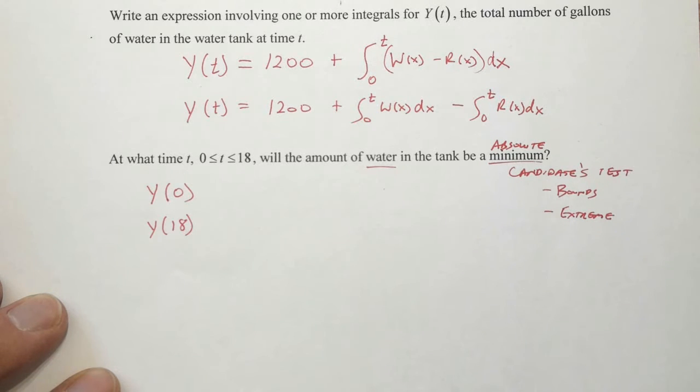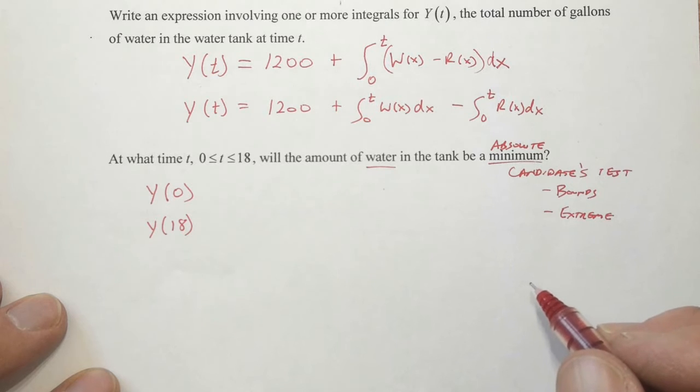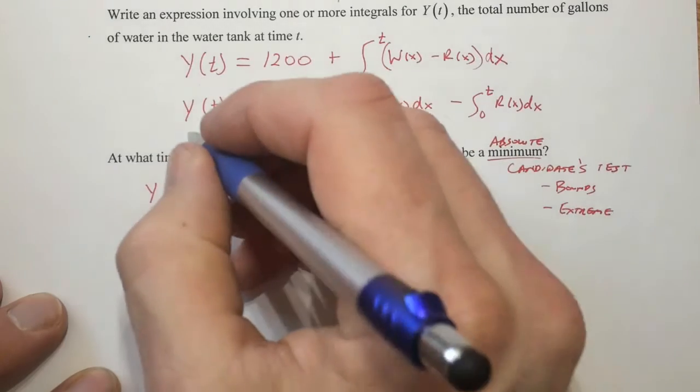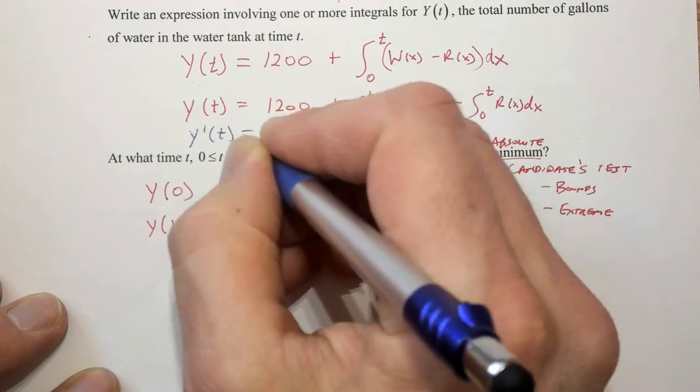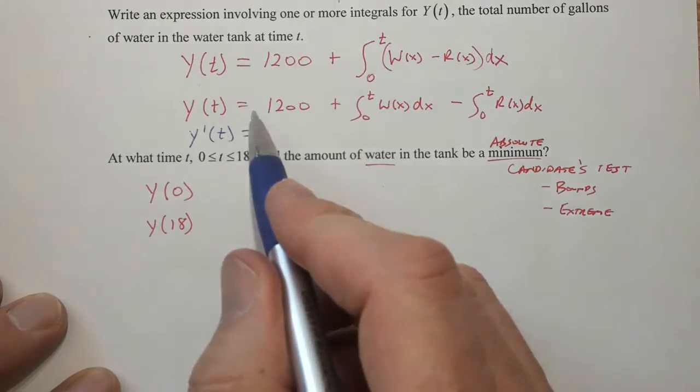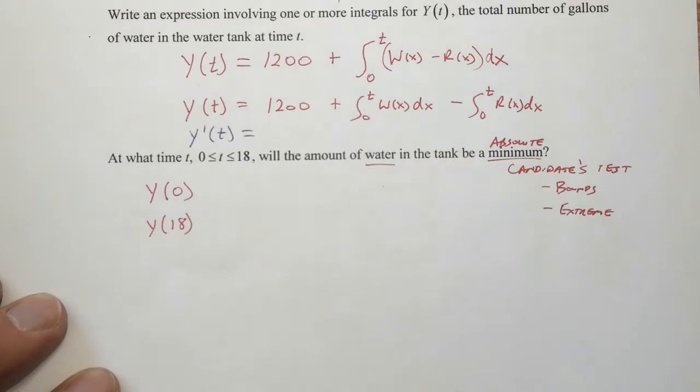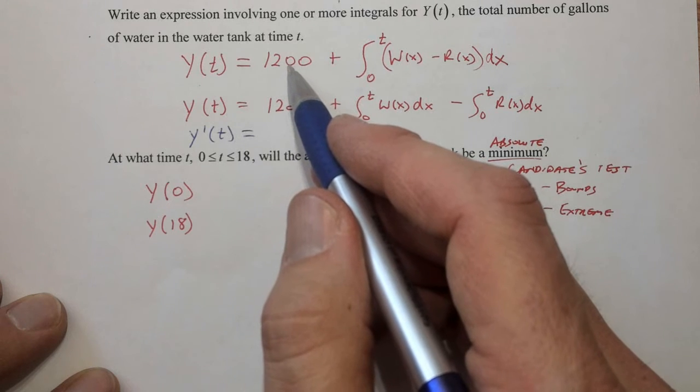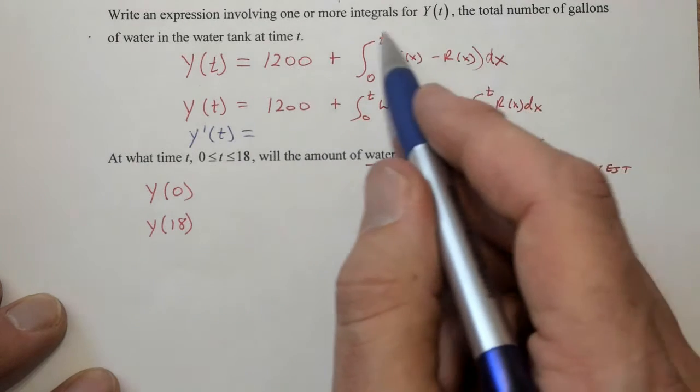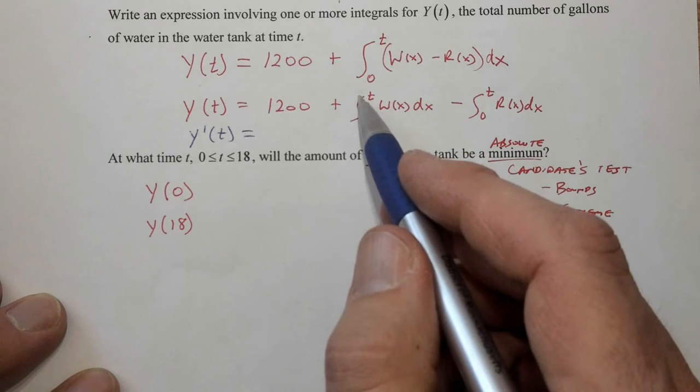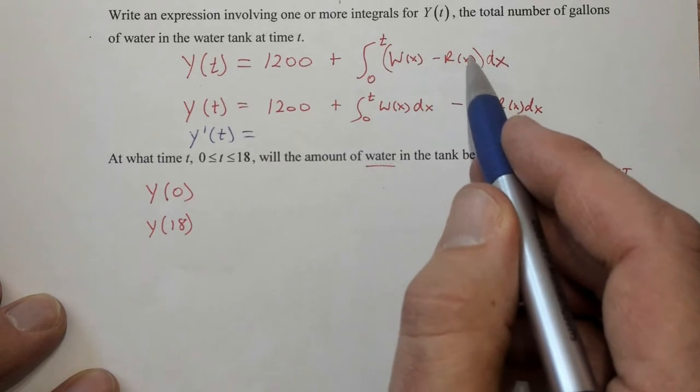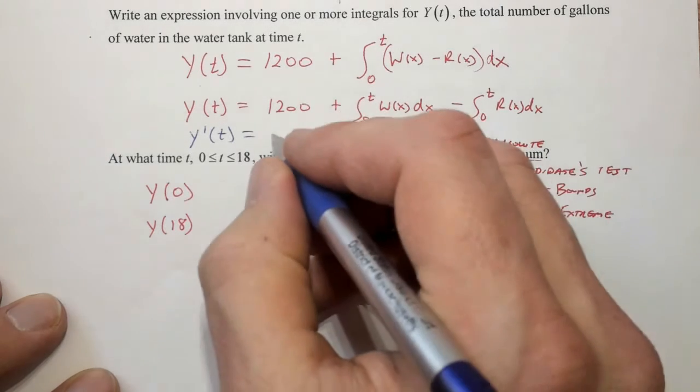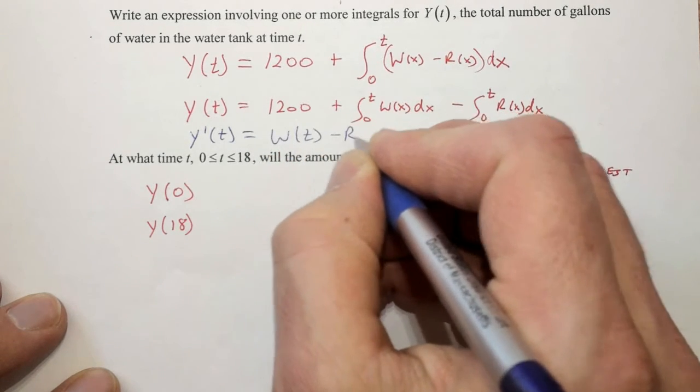Now, we're looking for an absolute min, so an absolute min is not going to occur when there's a relative max. We're really just looking for a relative min. A relative min occurs when the derivative of the function is equal to zero, which means we need Y'(t). And normally that would seem to be a big issue, but it's not, because we know how to quickly derive these accumulation functions. What's the derivative of 1,200? Yeah, it's zero. A constant derives to zero. Now we're just deriving this accumulation function right here. And the quick way to get that is to plug in your upper bound in for the variable that's in the integrand. So Y'(t) is W(t) minus R(t).